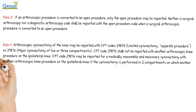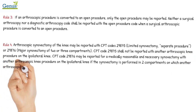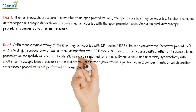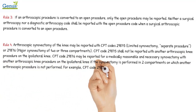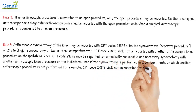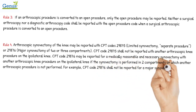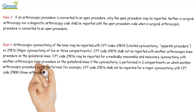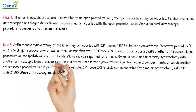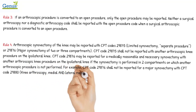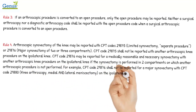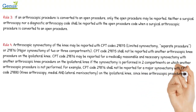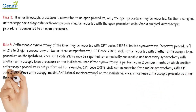For example, CPT code 29876 shall not be reported for a major synovectomy with CPT code 29880 (knee arthroscopy, medial and lateral meniscectomy) on the ipsilateral knee, since knee arthroscopic procedures other than synovectomy are performed in two of the three knee compartments.